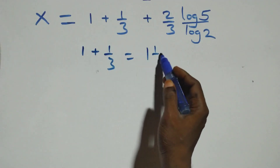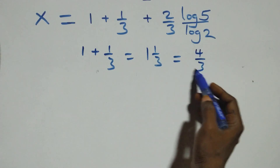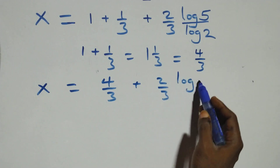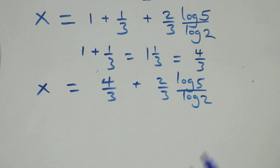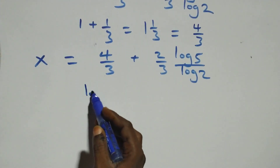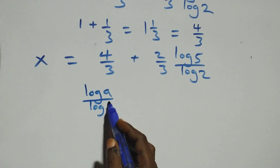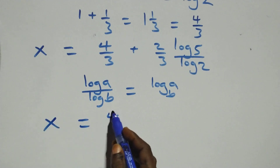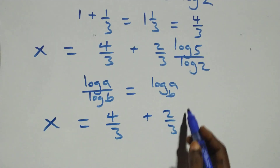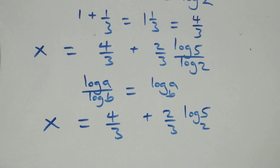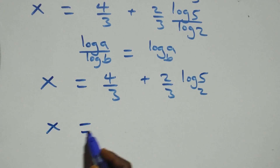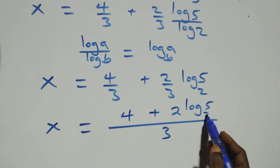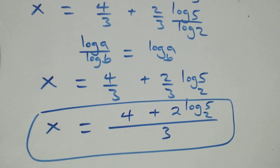This simplifies: 1 over 3 is the same as 1 over 1 over 3, which can be written as 4 over 3. So we have x equals to 4 over 3 plus 2 over 3 times log 5 over log 2. Applying the change of base rule — log a over log b is the same as log a to base b — we get x equals to 4 over 3 plus 2 over 3 log base 2 of 5. Bringing into one fraction: x equals to 4 plus 2 log base 2 of 5, all over 3.